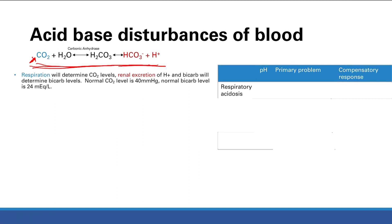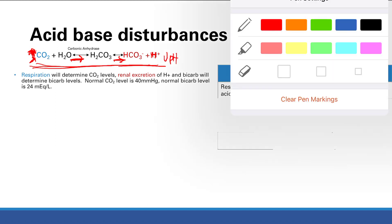What happens if you increase your CO2? If you retain CO2 and it's increased, you're going to force the equation to the right, and you get increased production of bicarb and H+. If you have increased production of H+, what happens to your pH? pH just depends on the concentration of H+. So you have a decreased pH when you increase CO2 — that's how that works.